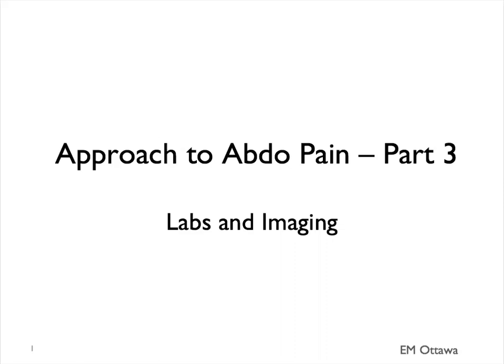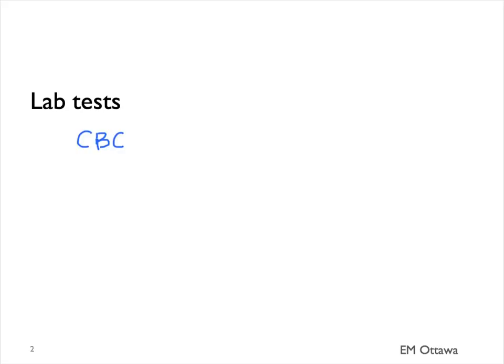Welcome to Approach to Abdominal Pain Part 3. In this section, we will discuss using lab values and imaging to hone in on our diagnosis. Let's first start with lab tests. We will start with the CBC, electrolytes, creatinine, and then more specific tests based on the presentation of the patient.